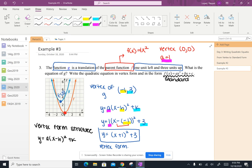So now we're going to use this vertex form to help me write it in standard form. So I've got y equals (x plus 1) squared plus 3.